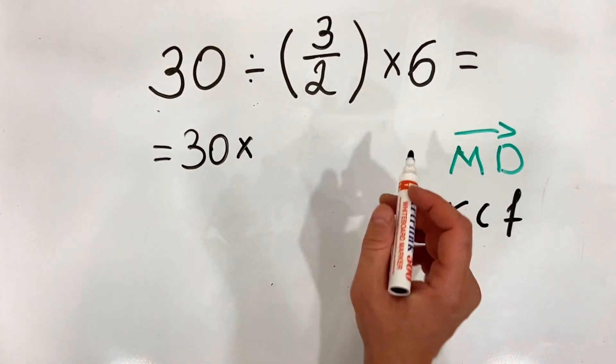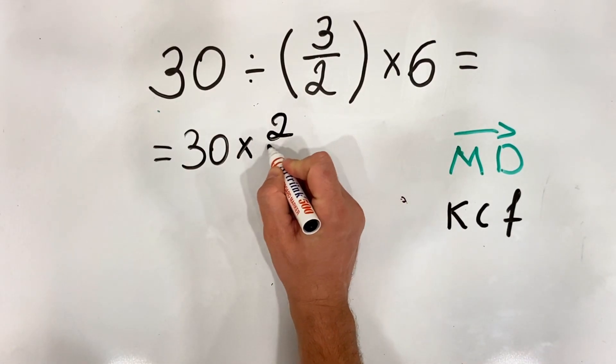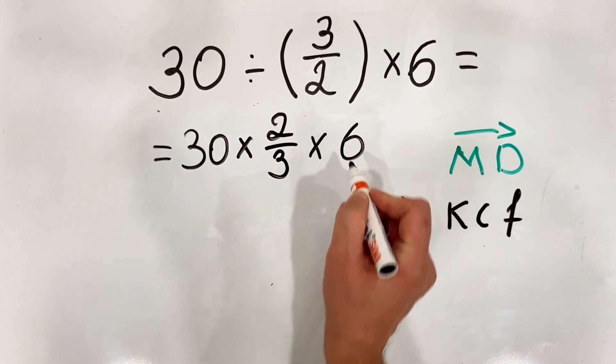And F stands for flip, so we multiply by its reciprocal. We multiply by 2 over 3, and then we multiply by 6.